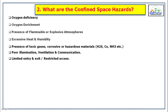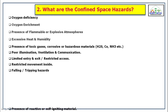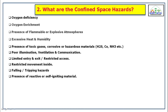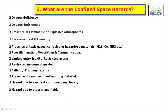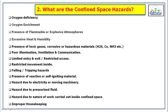Additional hazards include poor illumination, ventilation and communication, limited entry and exit, restricted movement inside, falling and tripping hazards, presence of reactive or self-igniting materials, hazards due to electricity or moving machinery, hazards due to pressurized fluid, hazards due to the nature of work carried out inside the confined space, improper housekeeping, and lone working. These are all the main hazards in confined space.